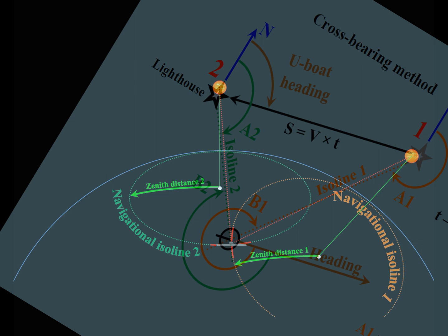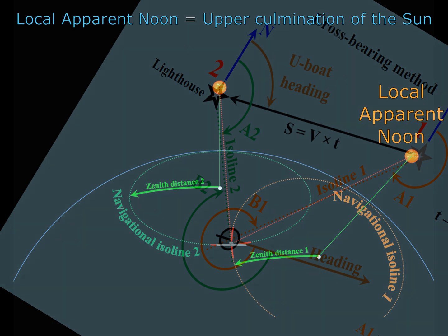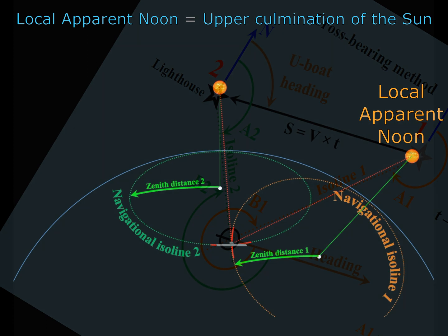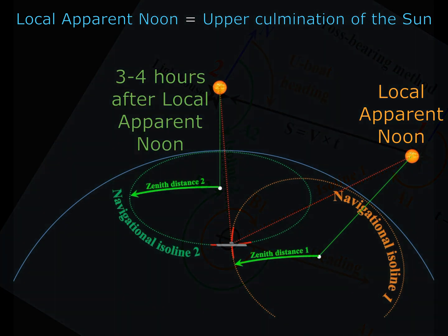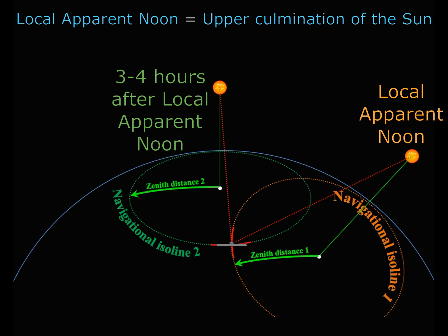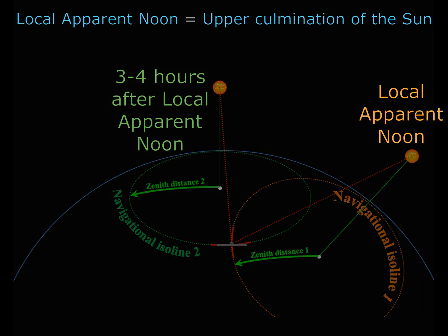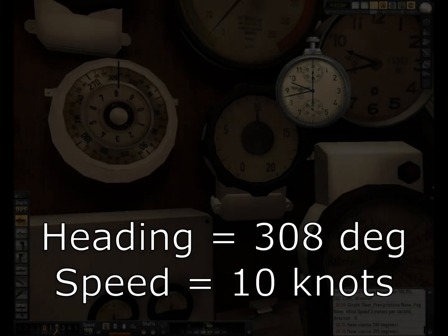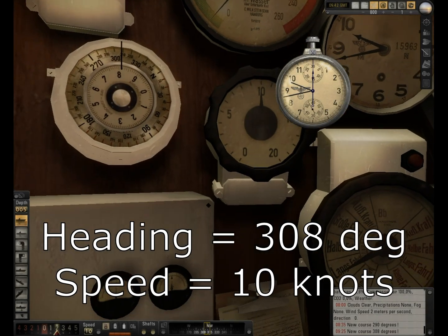In order to determine your position using the Sun in the simplest way, you need to get the first line of position by measuring the altitude of the Sun at the moment of upper culmination — that is, at the moment of local apparent noon. The second line of position must be obtained by measuring the altitude of the Sun three to four hours after local apparent noon.